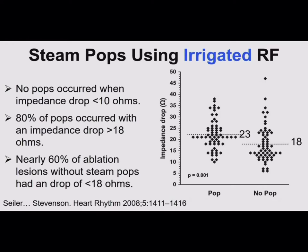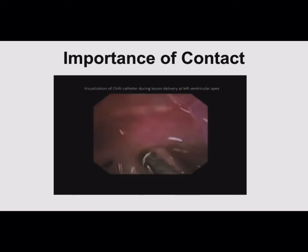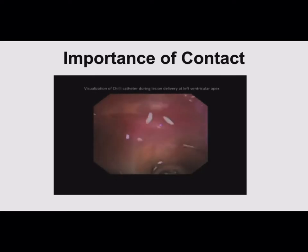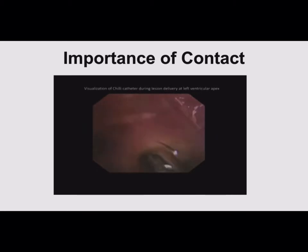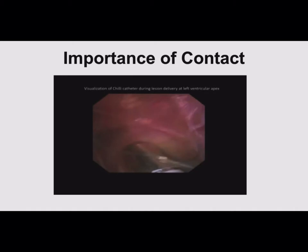There was a catheter called Voyage Medical that had a camera on the end — unfortunately the company went belly up. But it was a nice way to see contact. Looking at fluoro, feeling the catheter, you think you're in great contact. But you could see the catheter moving a lot more than you realize — the heart's beating, patients are breathing, they're moving around. It really made us appreciate the importance of contact as a component of making lesions.